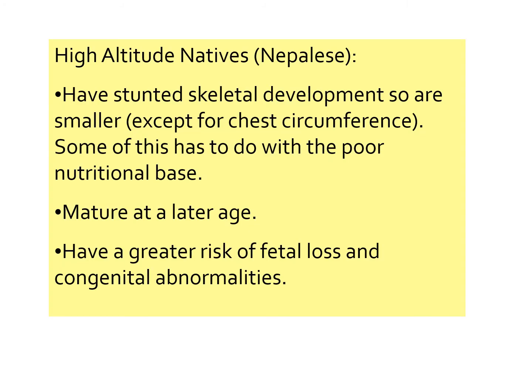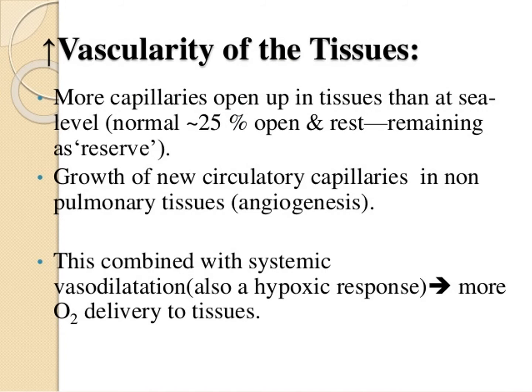Native Tibetans have a higher vascularization of their tissues — about 25 percent more capillaries than people at sea level. The growth of new capillary tissues occurs in non-pulmonary tissues as well, in a process called angiogenesis. This, combined with systemic vasodilation — also a hypoxic response — allows for more O2 delivery to the tissues. Tibetan people have adapted by creating more capillaries on average throughout their tissues, even in areas where capillary growth is not normally seen, and their arterial vasodilation increases O2 delivery to cellular organisms.